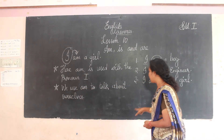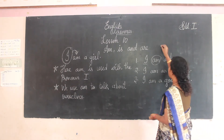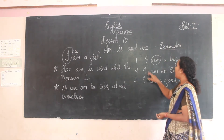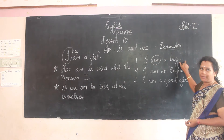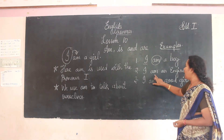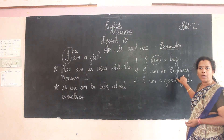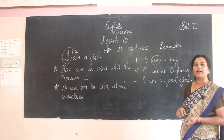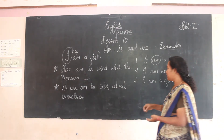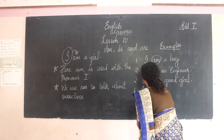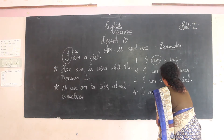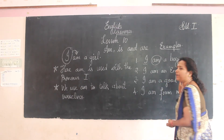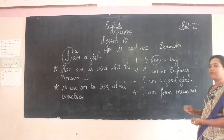Here are some examples: 'I am a boy.' 'I am an engineer.' 'I am a good girl.' 'I am so clever.' 'I am from Mumbai.' Or 'I am from Tamil Nadu.' 'I am from Kerala.' Like this we can write.